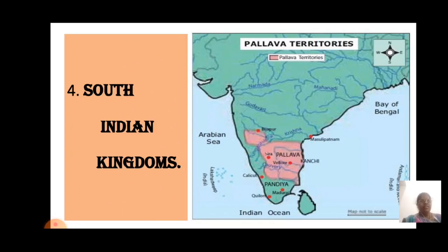As you know very well, we are in the fourth lesson of history, that is South Indian Kingdoms. The map you can see now shows the Pallava territories. The pink color shaded part includes Bijapur, Kanchi, Vellore — that is Mamallapuram — the pink region which represents the territories ruled by the Pallava kings.